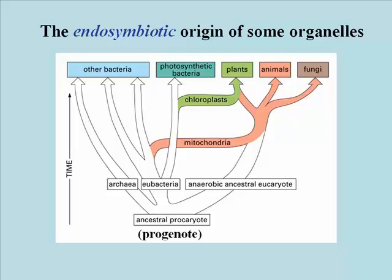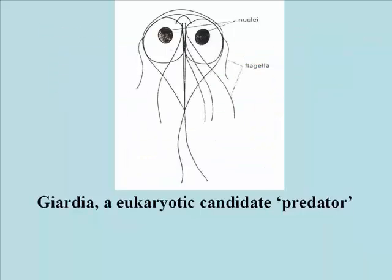The evolutionary tree shows the evolution of all life from a single ancestral cell — that progenote. It might be hard to imagine a primitive eukaryotic cell that could host an internal symbiont, because most eukaryotic cells already have all the familiar organelles.